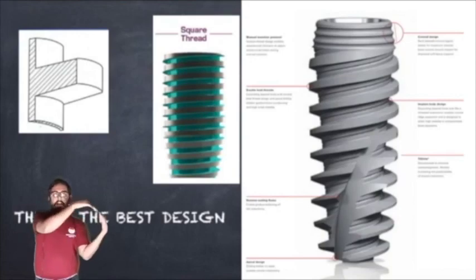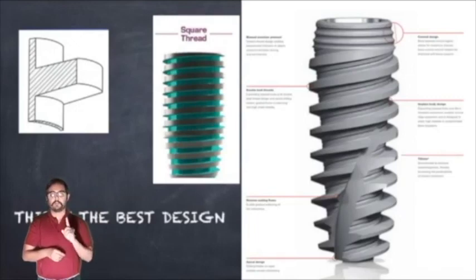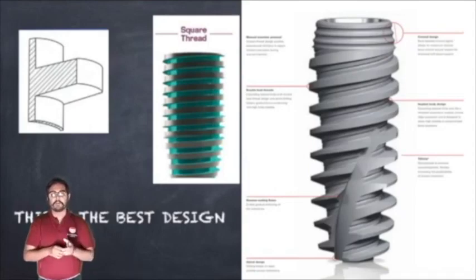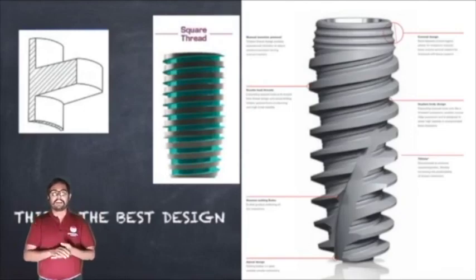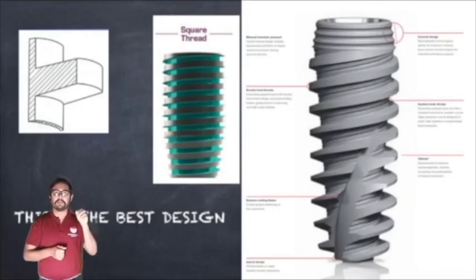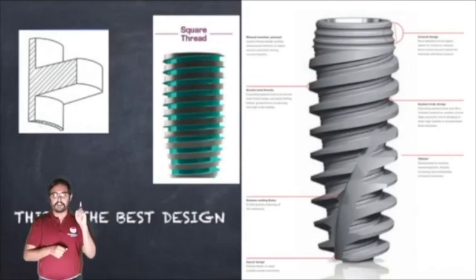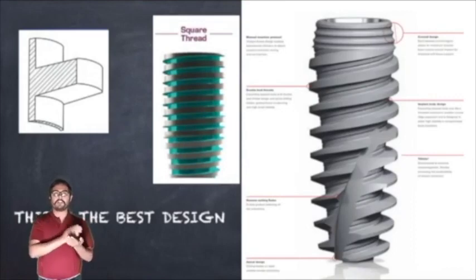I hope you are getting my point. A square thread is only made for compromised bone. Don't use a Nobel Active implant in D1 bone. If you are using a Nobel Active or any active implant in D1 bone, you have to be very specific that your osteotomy matches the diameter of the implant. You cannot drill narrow and insert a wide implant — the implant will fail. The implant may seem stable initially, but two months later when you open the cover screw, the implant may come out. So my strong point: don't use an active implant in D1 or D2 bone, and if you do, make sure your osteotomy matches the diameter of the implant.